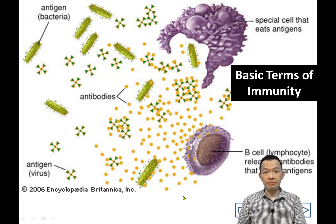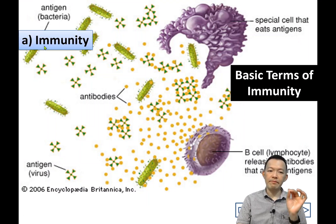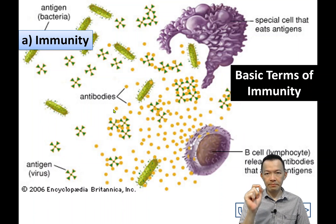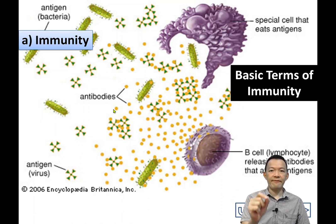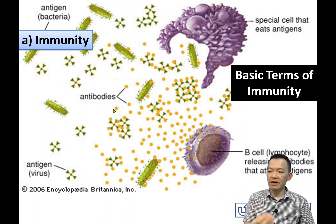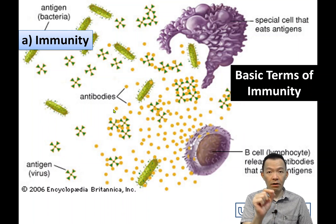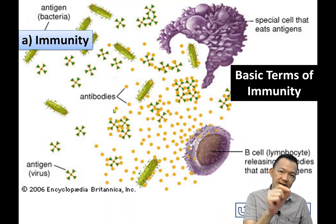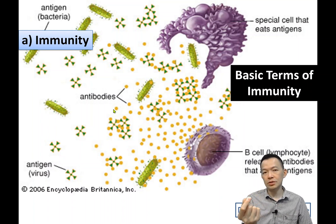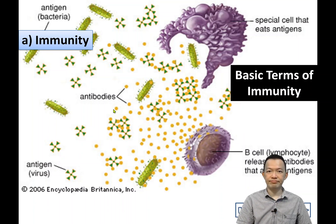So number one: what is meant by immunity? Immunity is the ability of the body to fight pathogens before and after infections. That means your body has the ability to fight those pathogens — before or after being infected — and defeat them. That's what we call immunity.